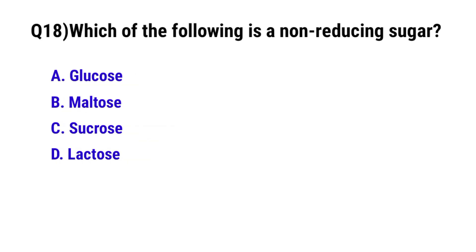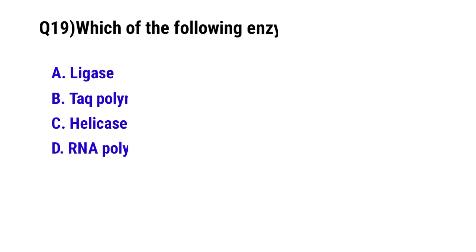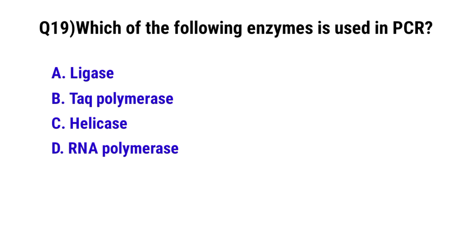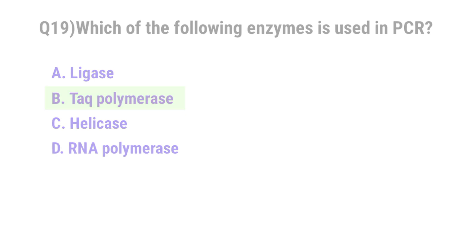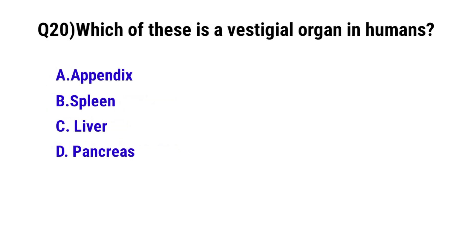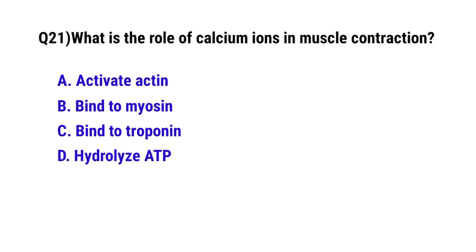Question 19: Which of the following enzyme is used in PCR? The correct option is B: Taq polymerase. Question 20: Which of these is a vestigial organ in humans? The correct option is A: appendix. Question 21: What is the role of calcium ions in muscle contraction? The correct option is C: it binds to troponin.